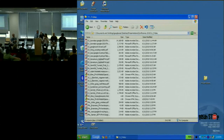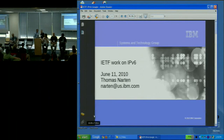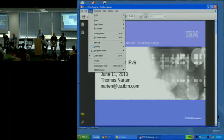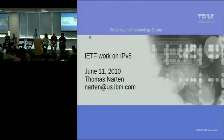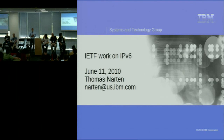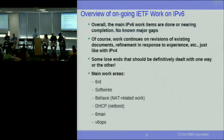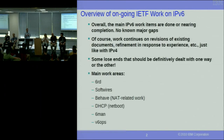Thomas presents on IETF work for IPv6 deployment. The general theme: what work still needs to be done on the IETF side? At a high level, the main work has been done. The major items are being worked on or are close to done. That said, there's always going to be work on v6 just like v4. There are still some loose ends. Key work areas include 6RD, Softwire/NAT64, DHCP, 6man, and v6ops.